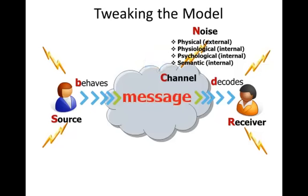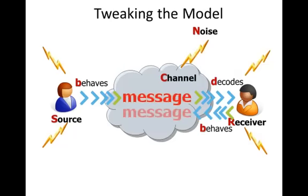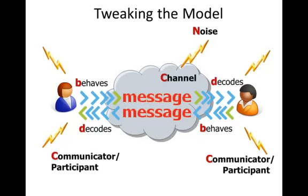Remember that in the Berlow model, the linear model of communication, there was no feedback. The way this model adapts it is it adds another line underneath. So now the receiver behaves. That sends a message through a channel. It can be the same channel, so there's also the concept of multiple channels. And then it goes to the original communicator, who was the source and is now the receiver, and they decode the message. So now we can change the terms of source and receiver to communicator or participant.